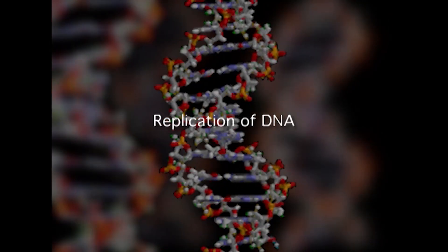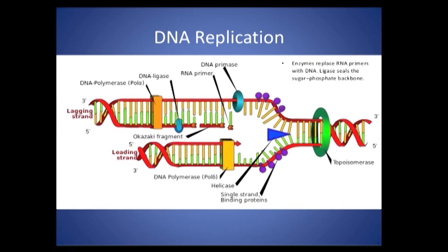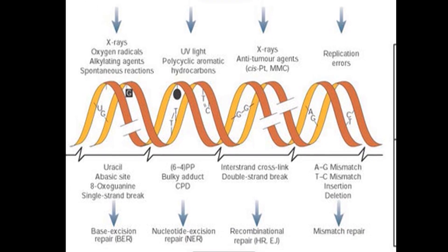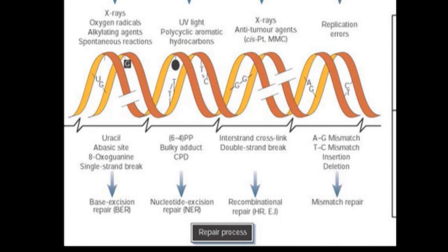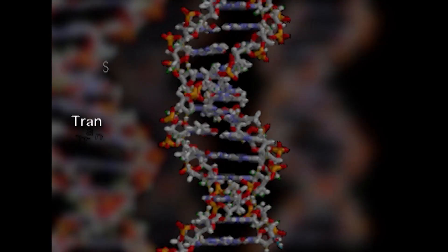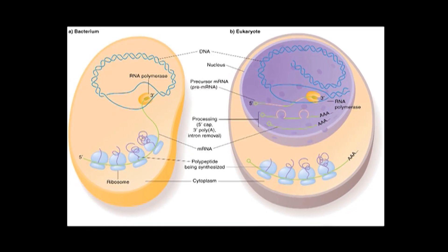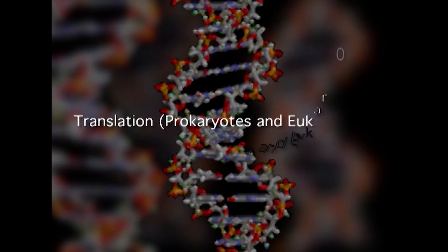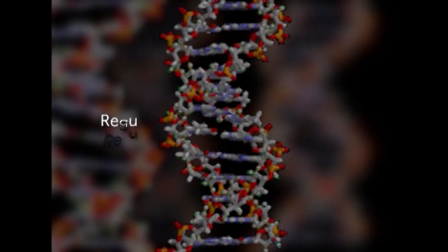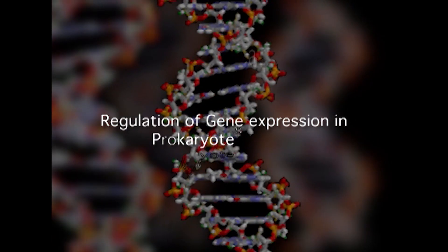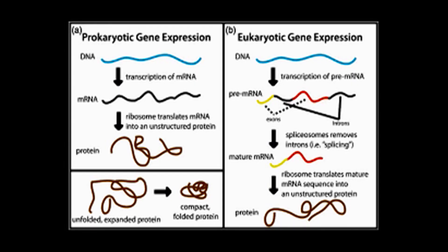The second unit covers replication of DNA, where we will study the replication mechanisms occurring inside the cell, the different methods that cause damages in the DNA, and the different mechanisms of DNA repair. The third unit comprises DNA transcription in prokaryotes and eukaryotes, covering transcription mechanisms in both prokaryotic and eukaryotic cells. The fourth unit comprises the prokaryotic and eukaryotic translation machineries.